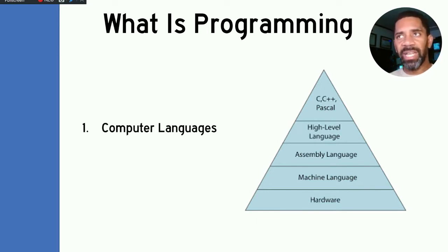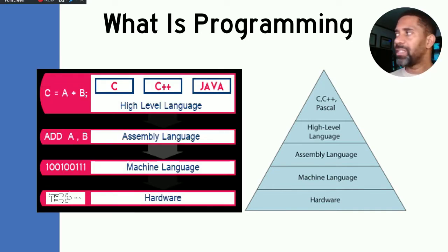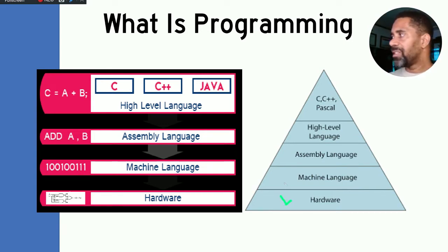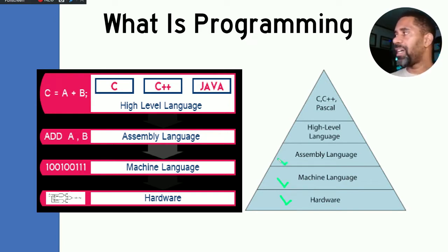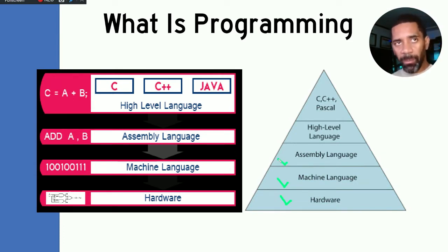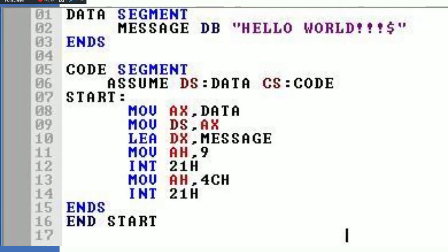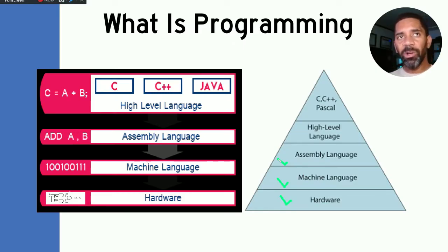Before computer languages were standardized, we had layers. Starting at the bottom of the pyramid, we had the hardware level. The hardware then had machine language — a complicated instruction-based language used to access areas of memory for the computer to do certain tasks. We simplified that by moving into assembly language, which is more human-understandable and translates to a one-to-one correlation with machine language. Things were getting a little more humanized.